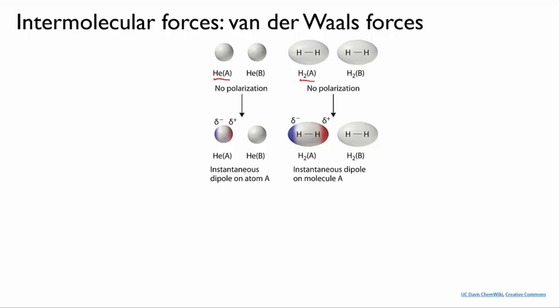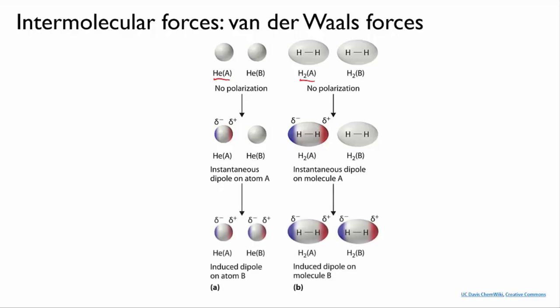An instantaneous dipole on one particle can then cause an induced dipole on a neighbouring one. For instance, the slight positive charge on the helium atom here attracts a little bit of electron density on the left of the neighbouring atom, causing uneven electron density and hence a dipole on it.